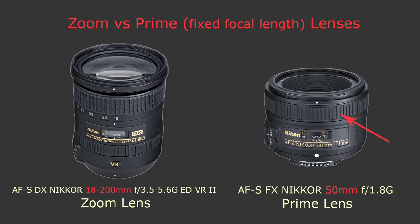Prime lenses have only one ring on the lens which you can turn, which is the focusing ring. Unlike zoom lenses which have two rings — one of which is the focusing ring and another one is the zoom ring. With the zoom ring you can change the focal length of the lens.